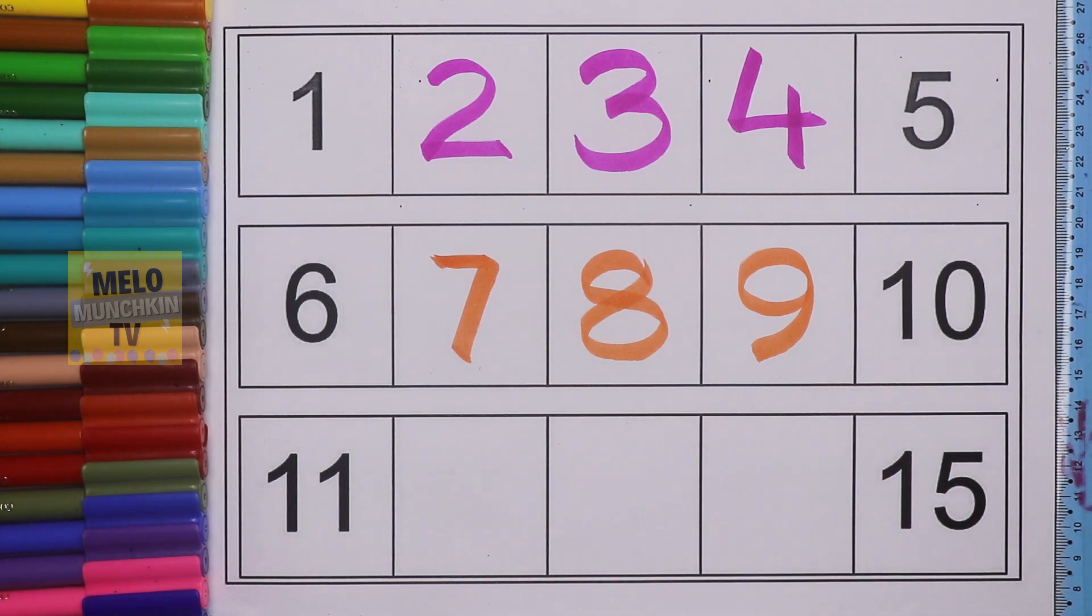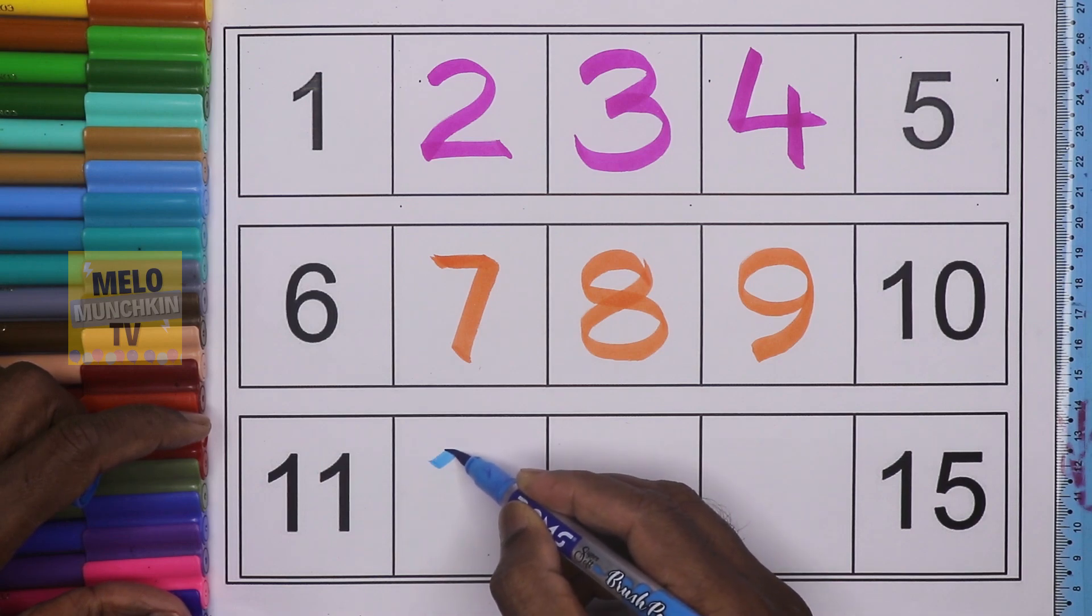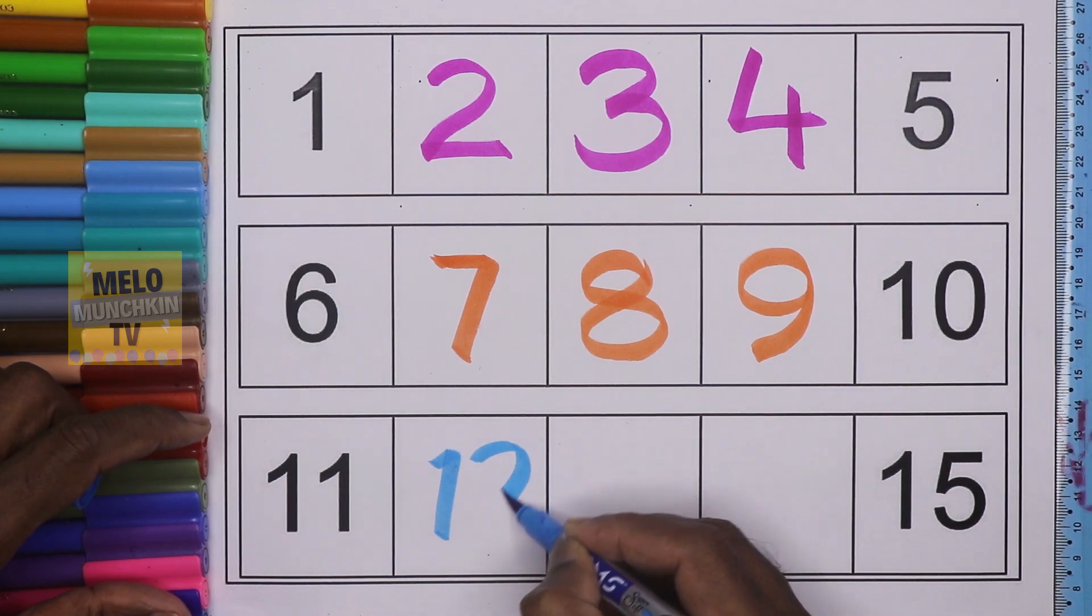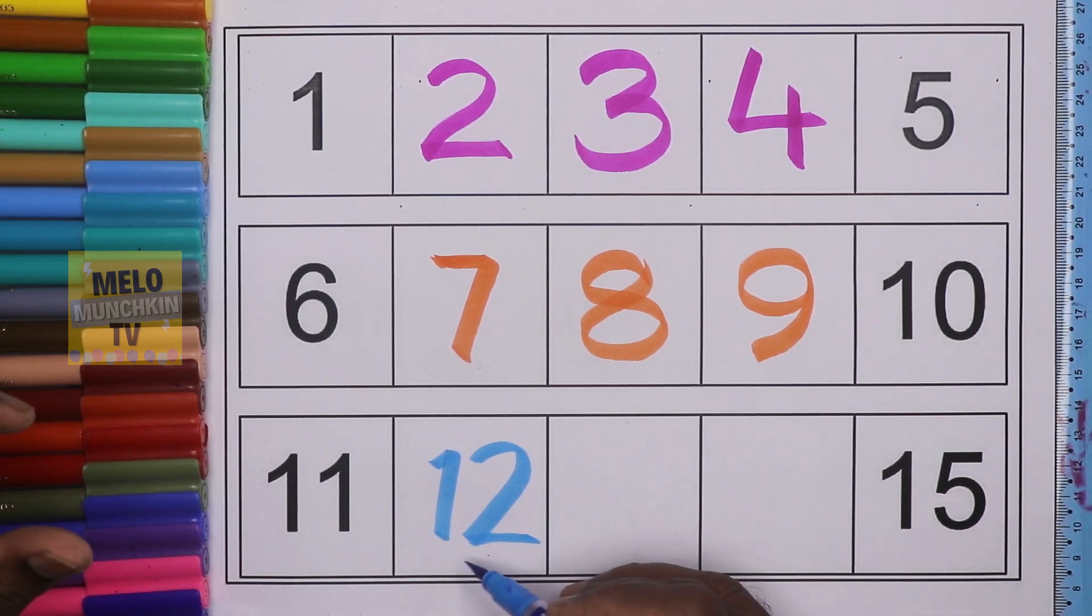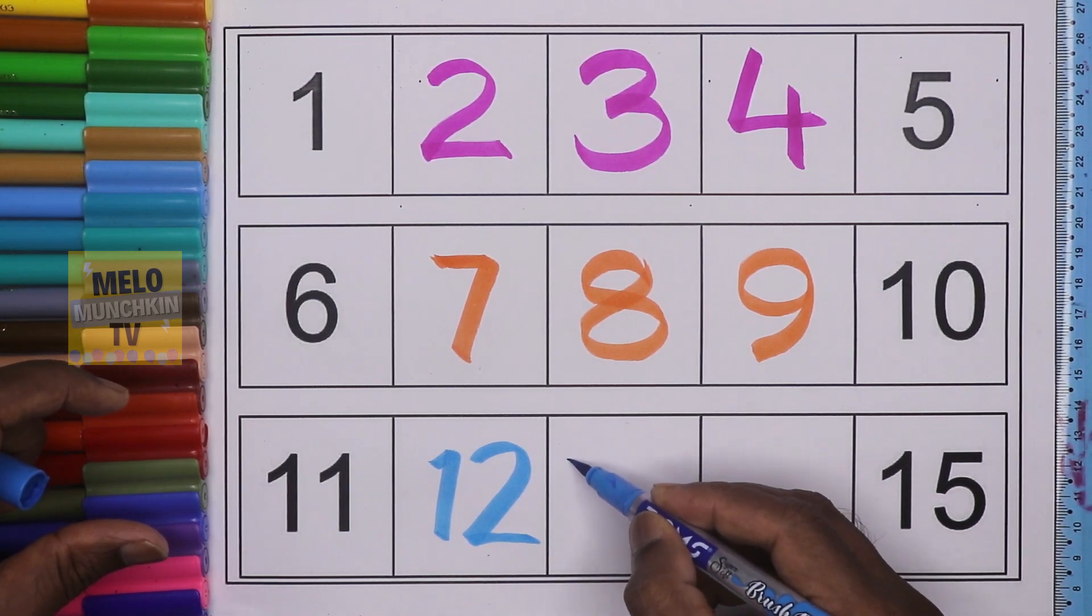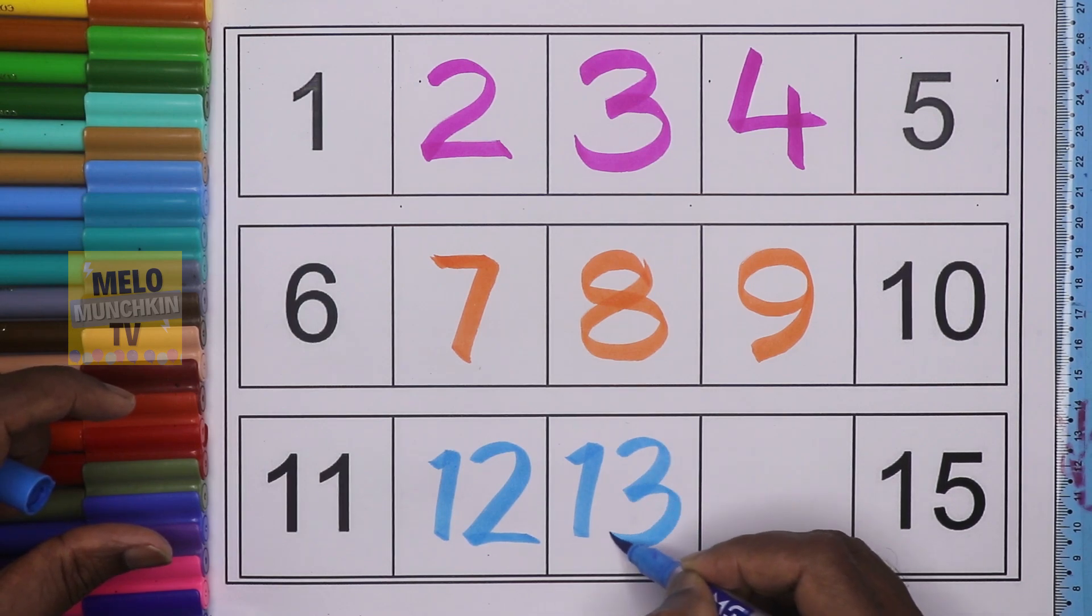The last line, blue color. After 11 it is 12, one and two, this is twelve, T-W-E-L-V-E. After 12 it is 13, T-H-I-R-T-double E-N, thirteen.